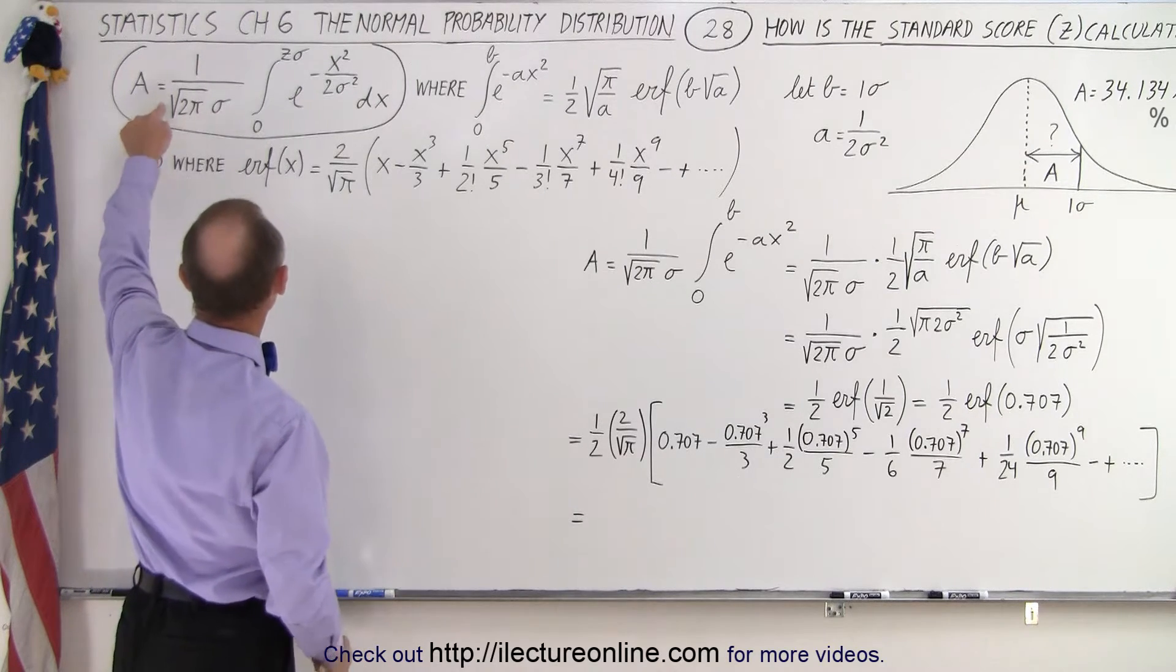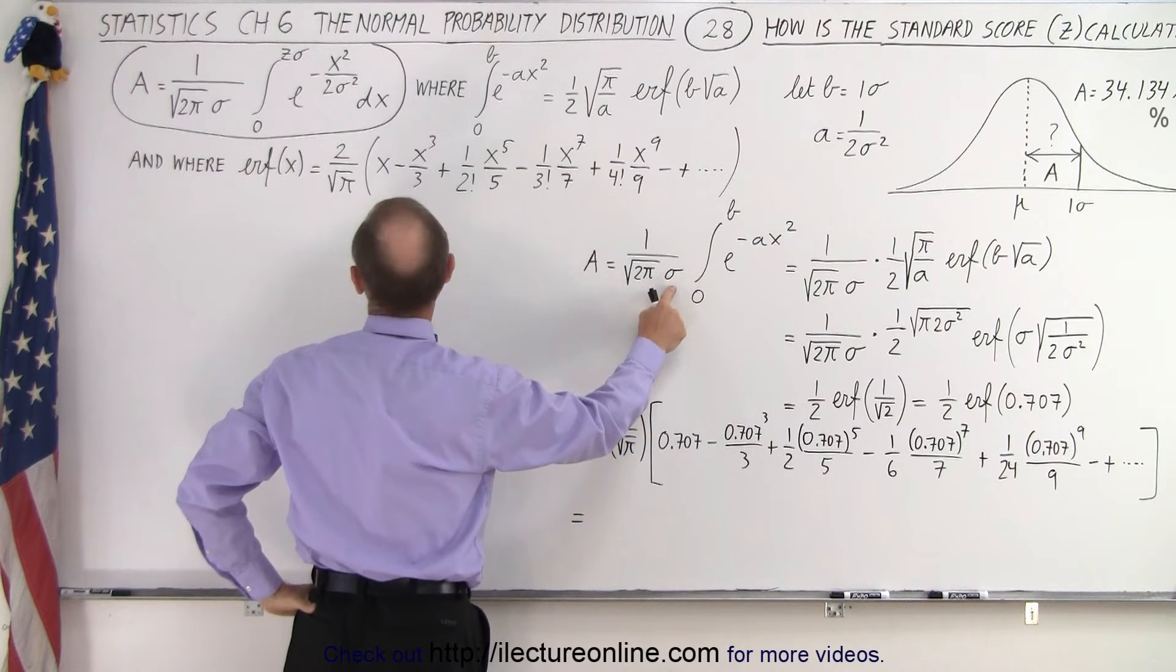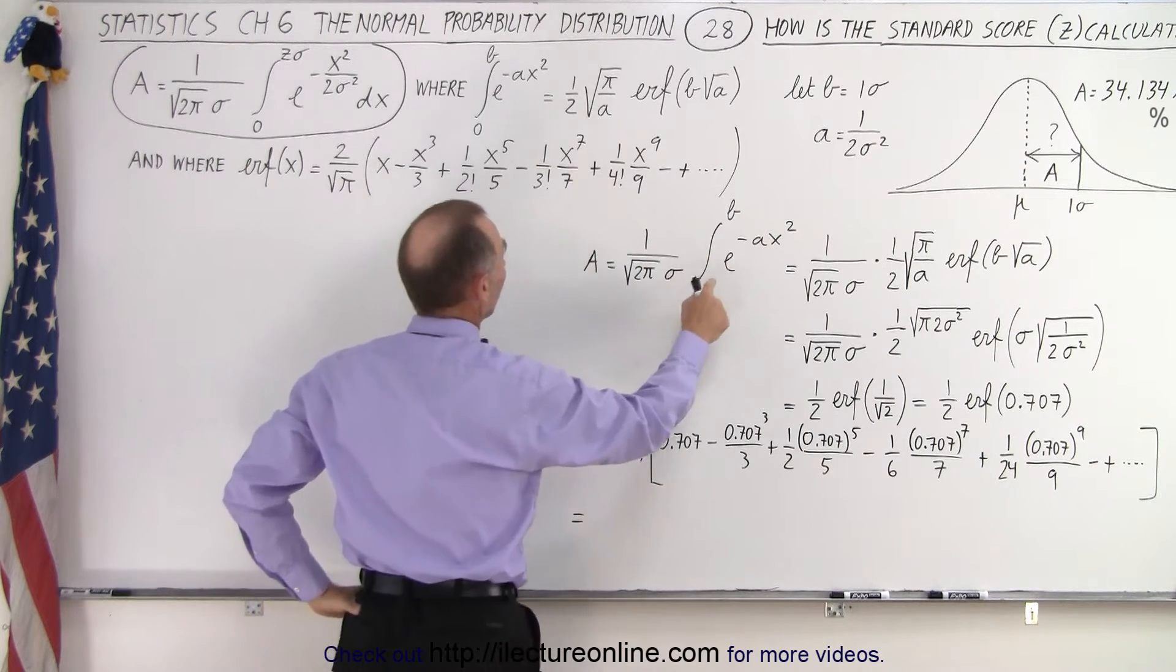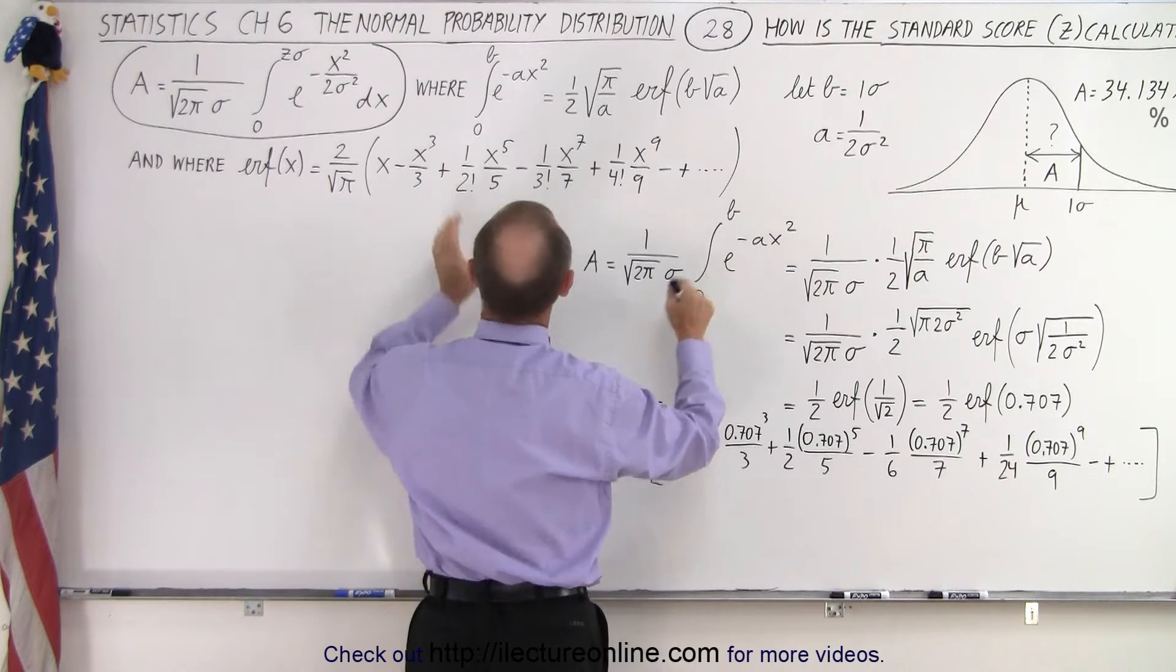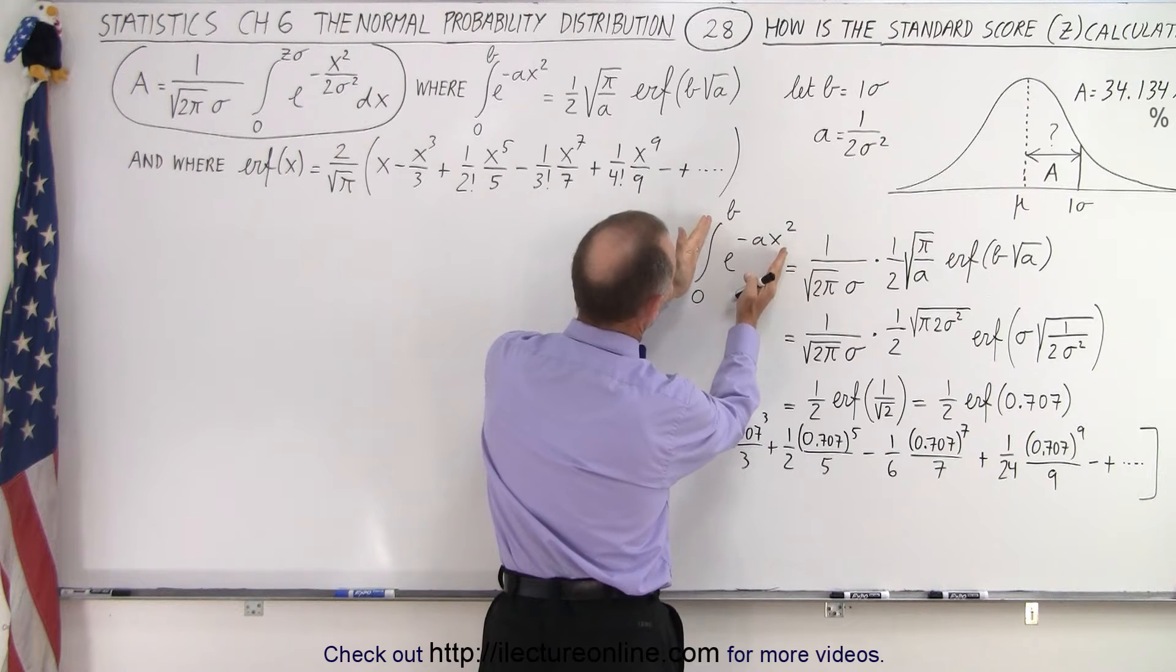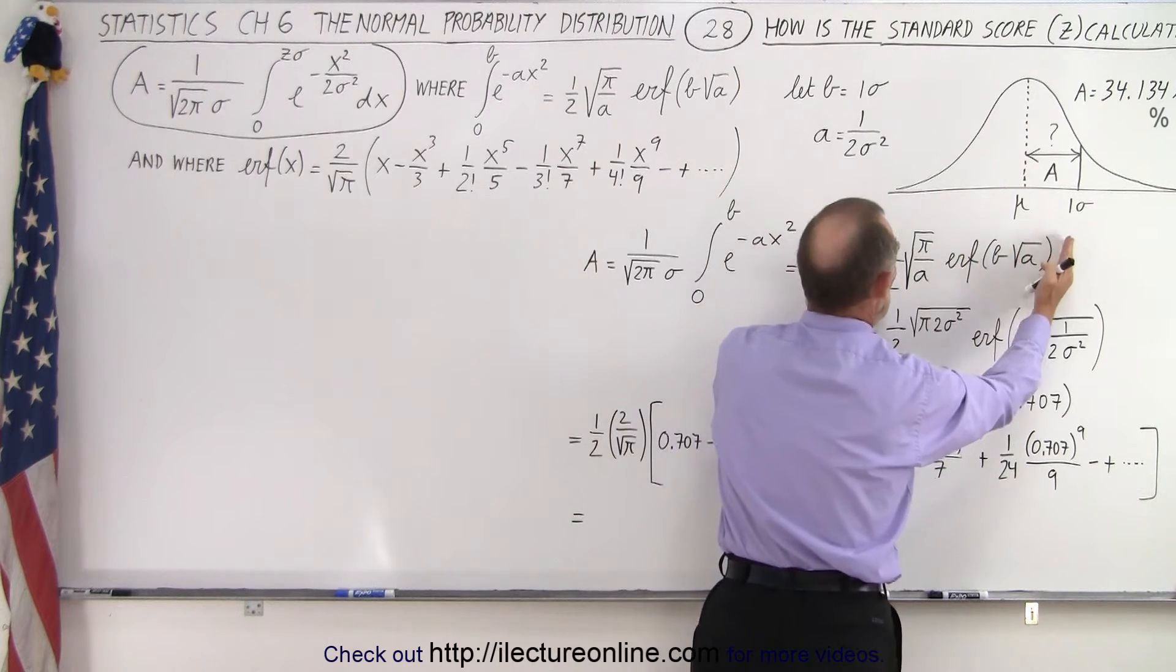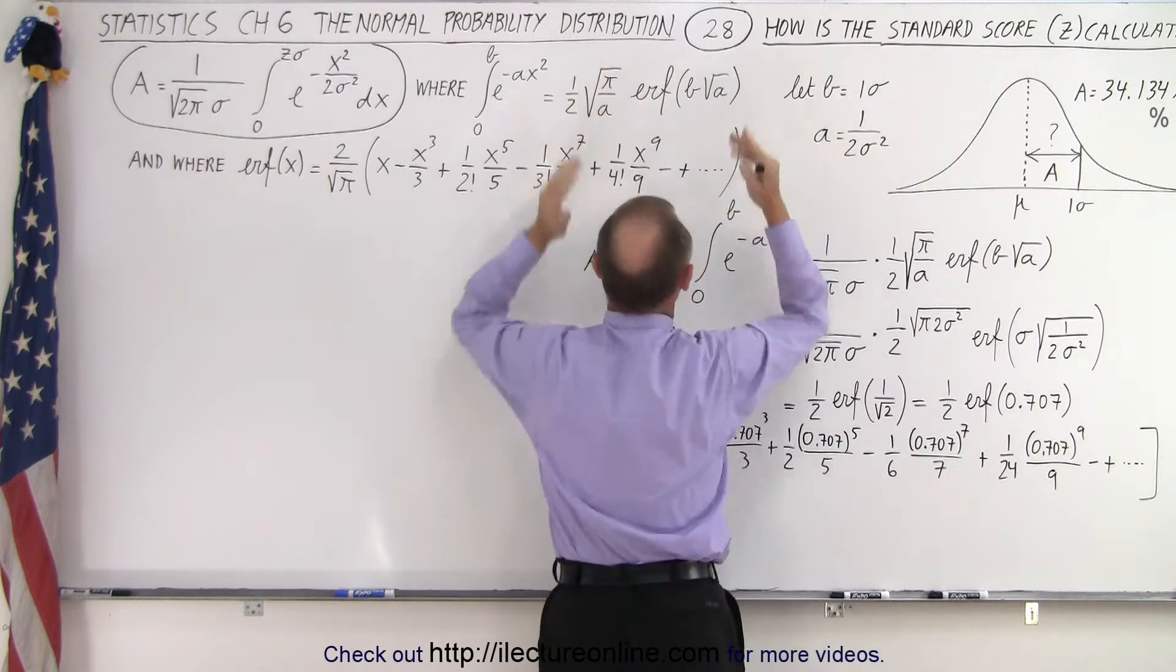So now we need to apply this. So first of all, area equals 1 over the square root of 2π times 1 over σ times the integral of e to the minus ax squared. So we wrote it in this format, so we can replace this portion right here by what that's equal to. So this portion becomes this right here, which is defined right there.